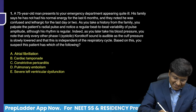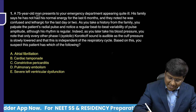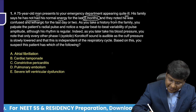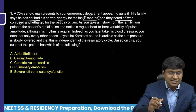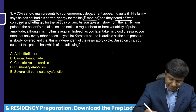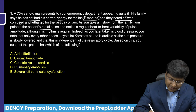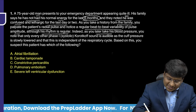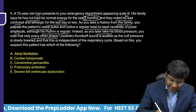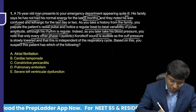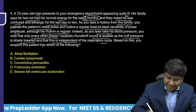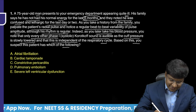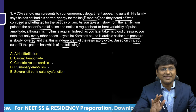The first question: A 75-year-old man presents to the emergency department appearing quite ill. His family says he has not had his normal energy for the last six months and has been confused and lethargic for the last day or two. On palpating the radial pulse, you notice a regular beat-to-beat variability of pulse amplitude, though the rhythm is regular. On blood pressure measurement, only every other phase one Korotkoff sound is audible as cuff pressure is slowly lowered, independent of the respiratory cycle. Which disorder does this patient have? Options: atrial fibrillation, cardiac tamponade, constrictive pericarditis, pulmonary embolism, or severe left ventricular dysfunction.